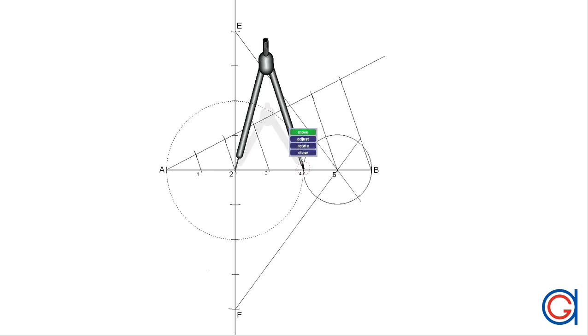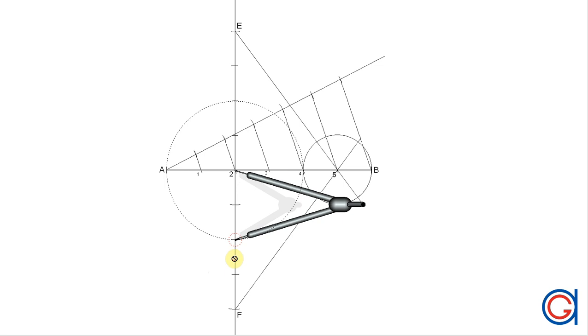The next step is centering the compass on point two and with radius 2A we draw a semicircle with a thicker line.